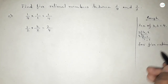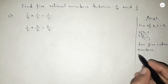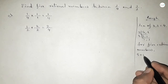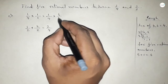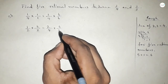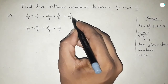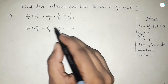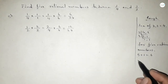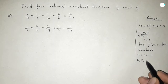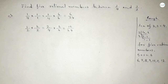For finding 5 rational numbers between any two numbers, we follow this method: multiply both numbers up and down by 5 plus 1, equal to 6. So here also multiply by 6 over 6. This gives us 6 over 24 and 12 over 24.